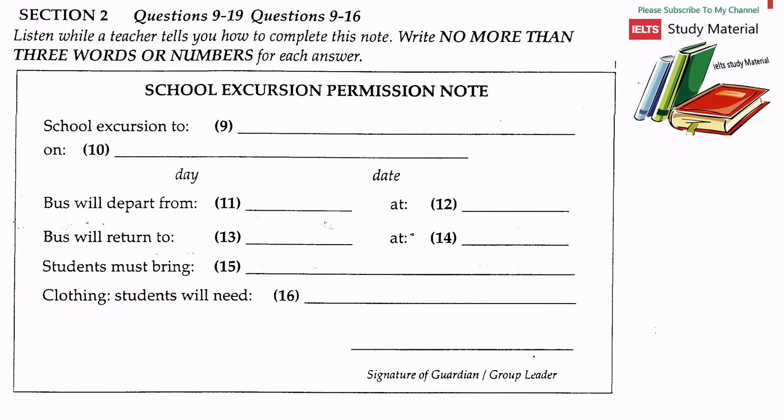Now turn to section two. You are going to hear a teacher helping high school students visiting from an overseas school to fill in a school excursion permission note. First look at questions 9 to 16. The school excursion permission note — listen while a teacher tells you how to complete it. Write no more than three words or numbers for each answer.